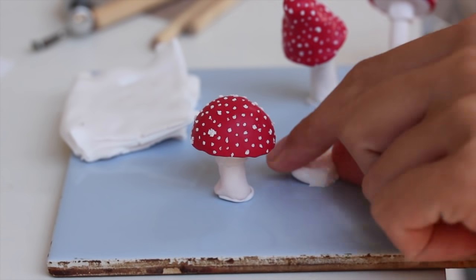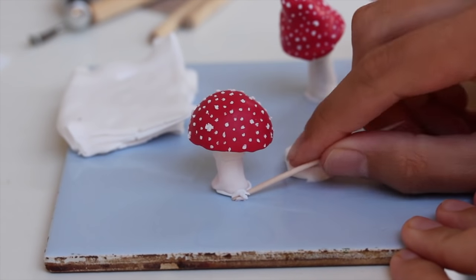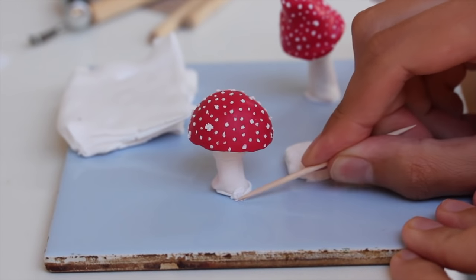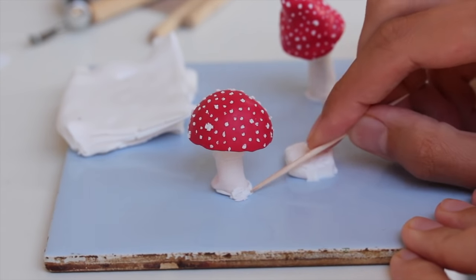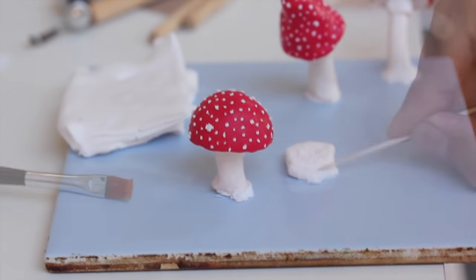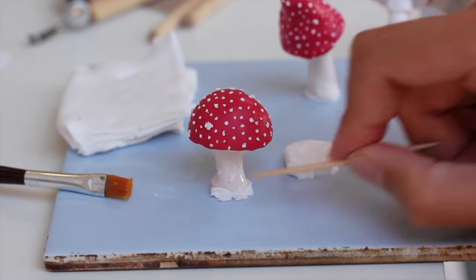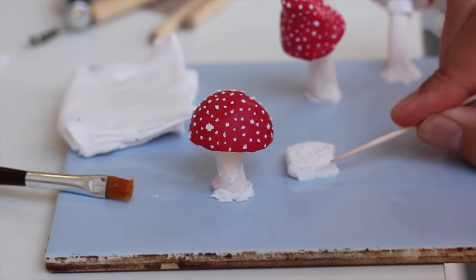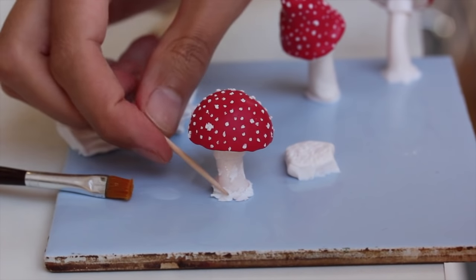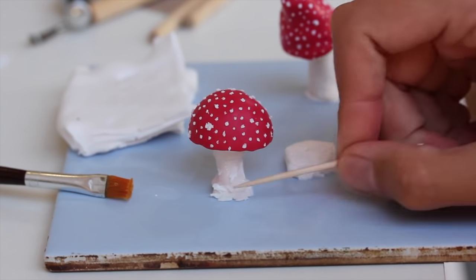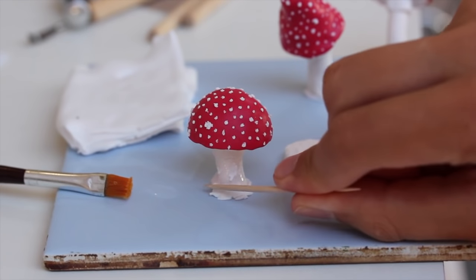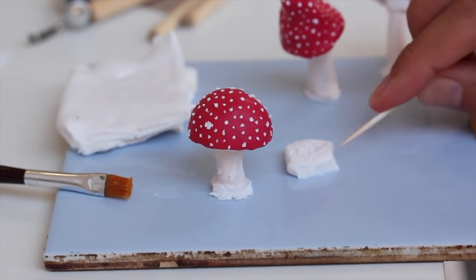After baking and cooling up, we are going to make the base. Just add some liquid clay and then add some white clay all around and give it some texture. This way you ensure that the base is nice and flat so you can use it better in your artwork.